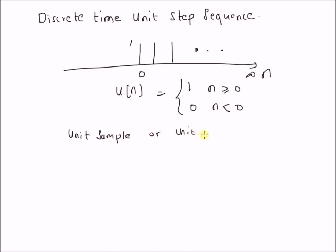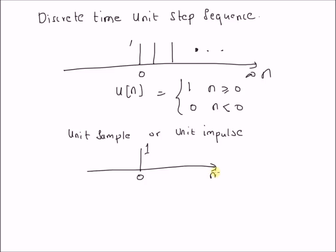The unit impulse, also called unit sample, is defined as a value of one at n equal to zero. It is denoted by δ(n), which equals 1 for n = 0, and 0 elsewhere.